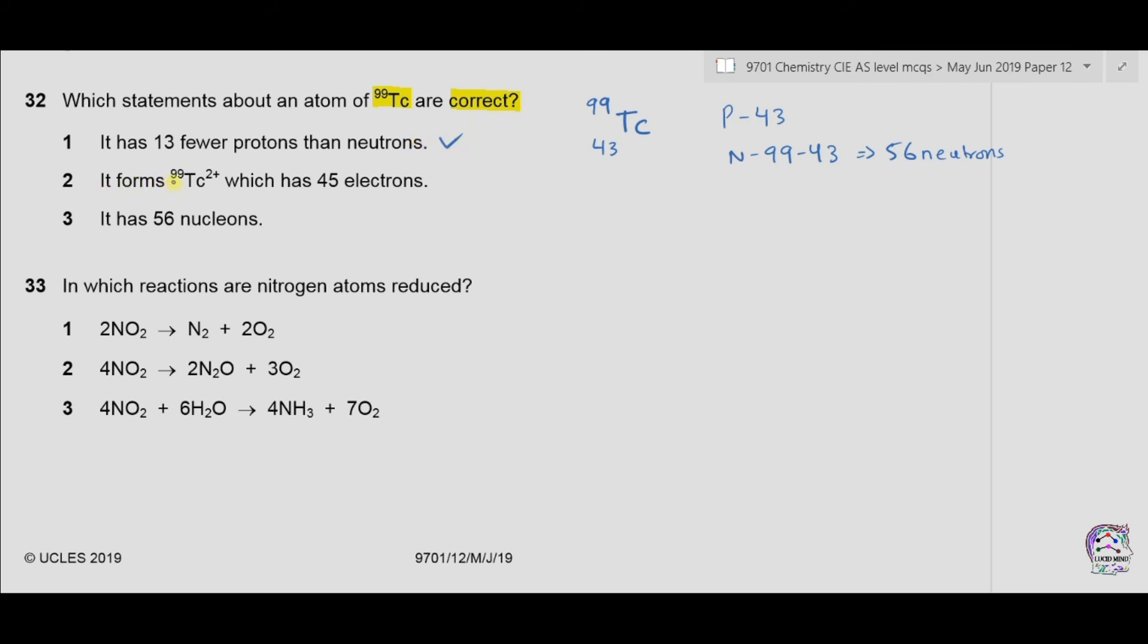Second option. It forms technetium plus 2 which has 45 electrons. Now, in neutral technetium, we have 43 electrons. When it becomes plus 2 charge, it means 2 electrons are removed. So it must have 41 electrons instead of 45. So therefore, this is wrong. 3. It has 56 nucleons. As we can see in the symbol, we have 99 nucleon numbers. So therefore, it is not 56. It is 99. So 3 is also incorrect. So only correct option is 1. So therefore, the answer is D.